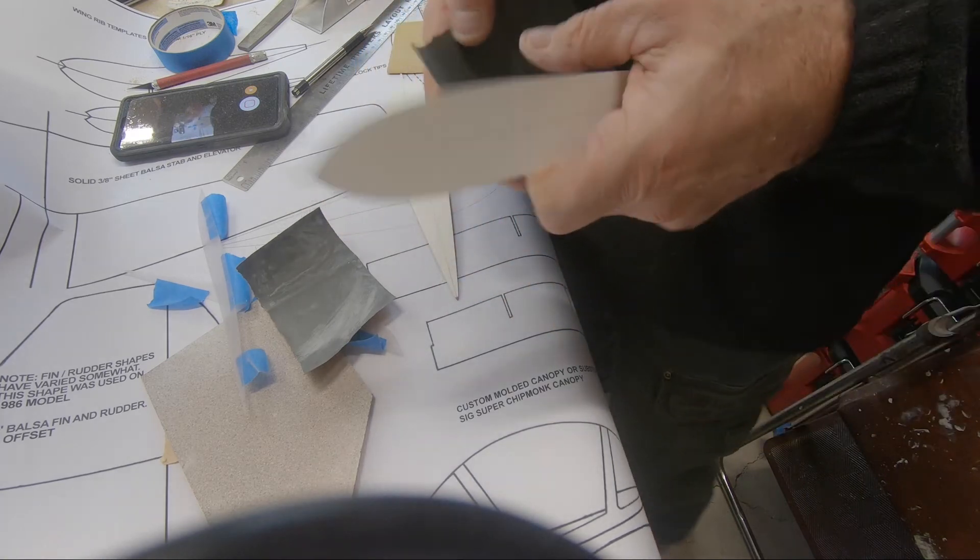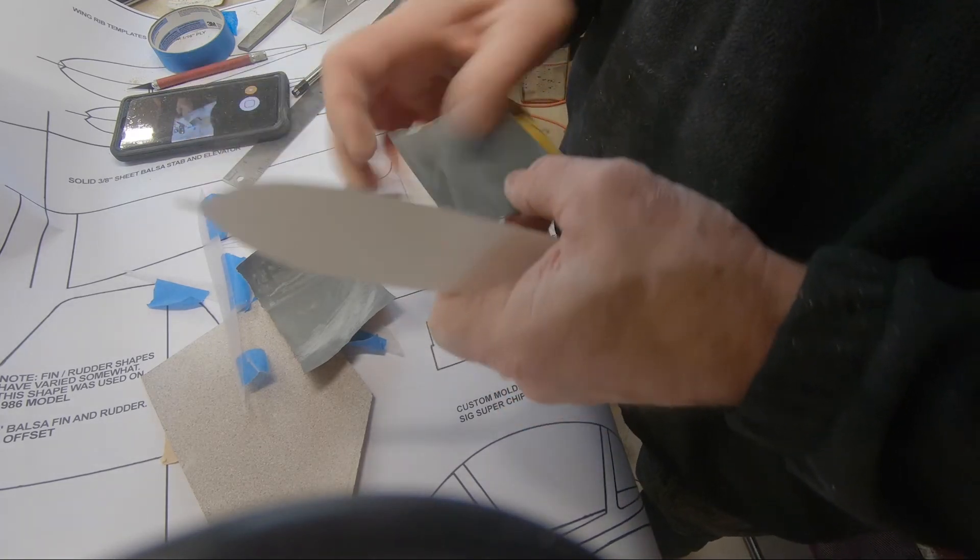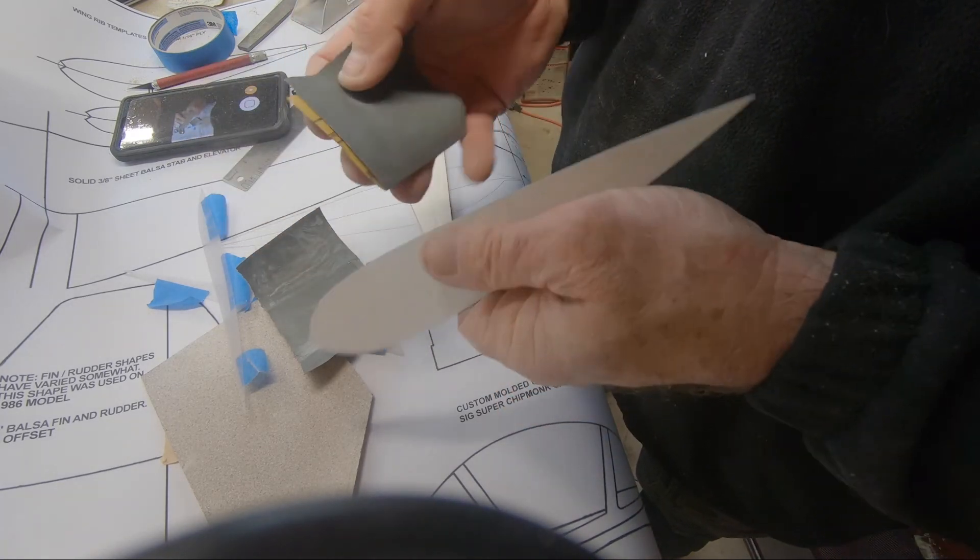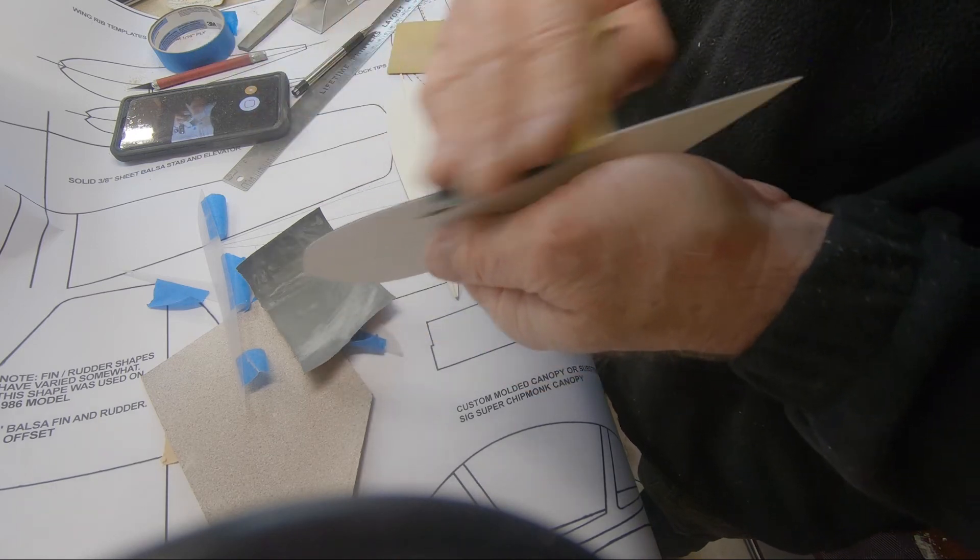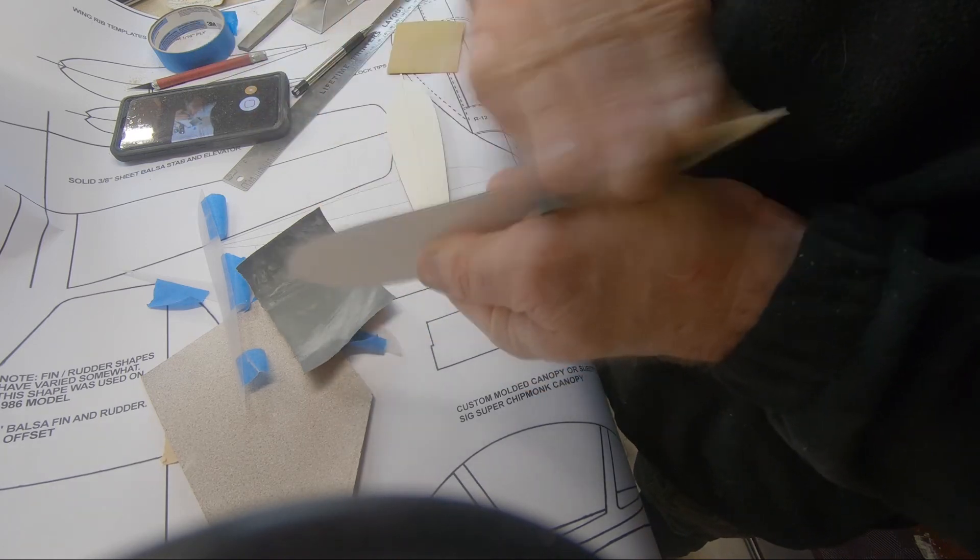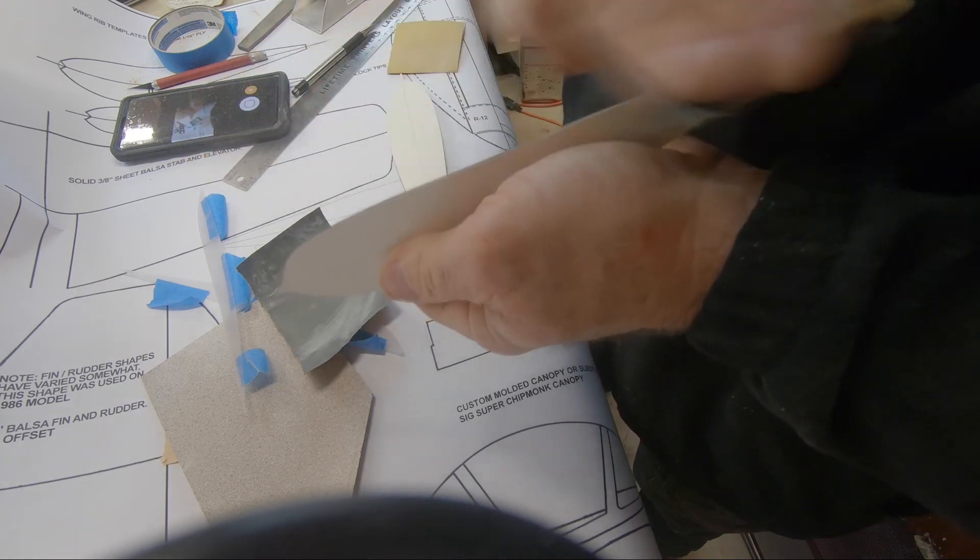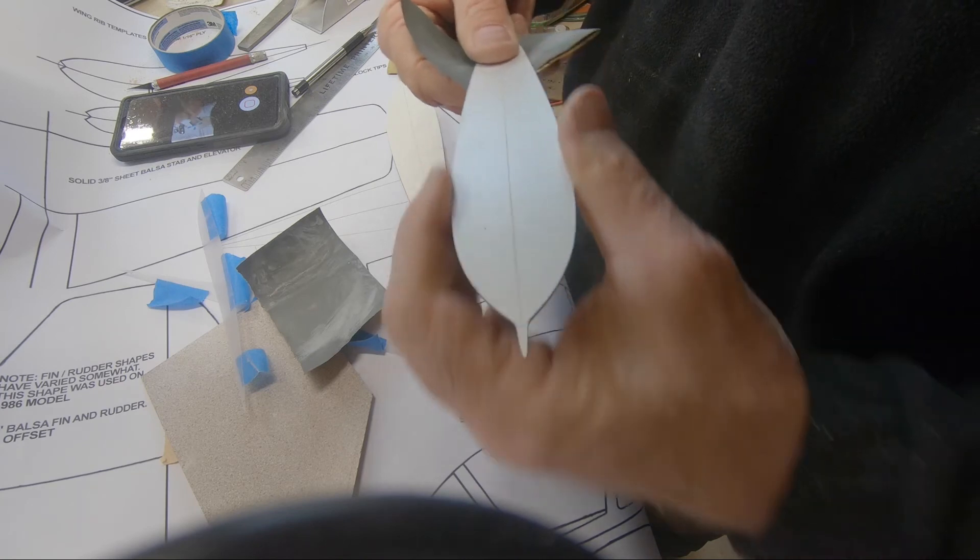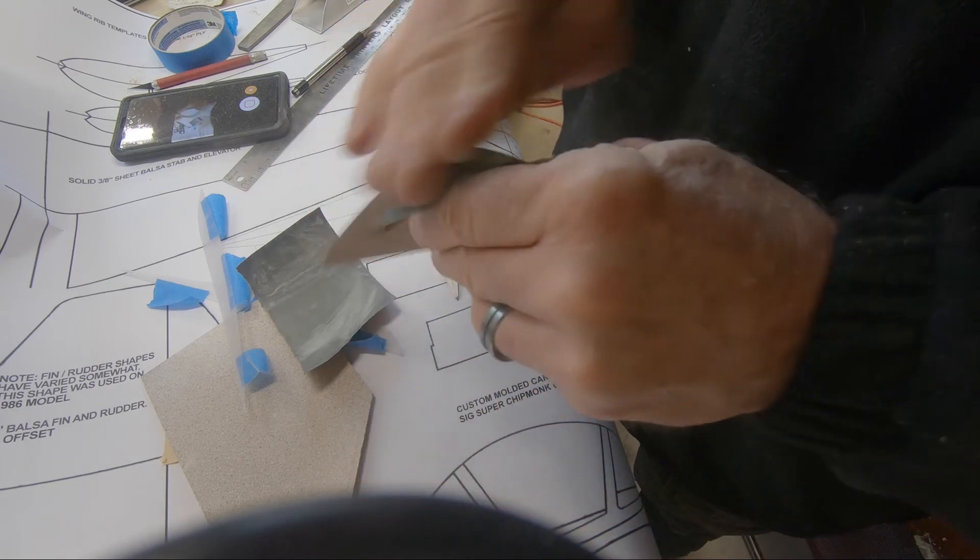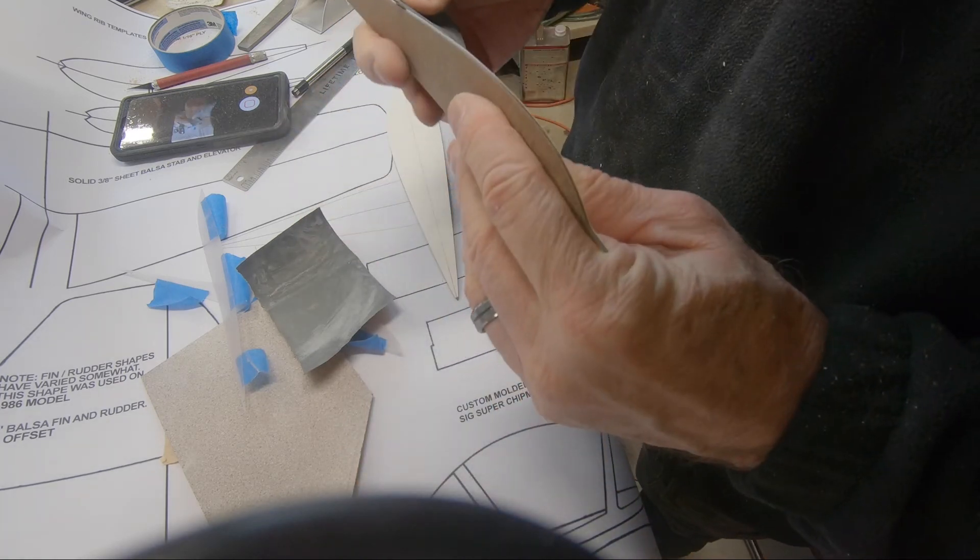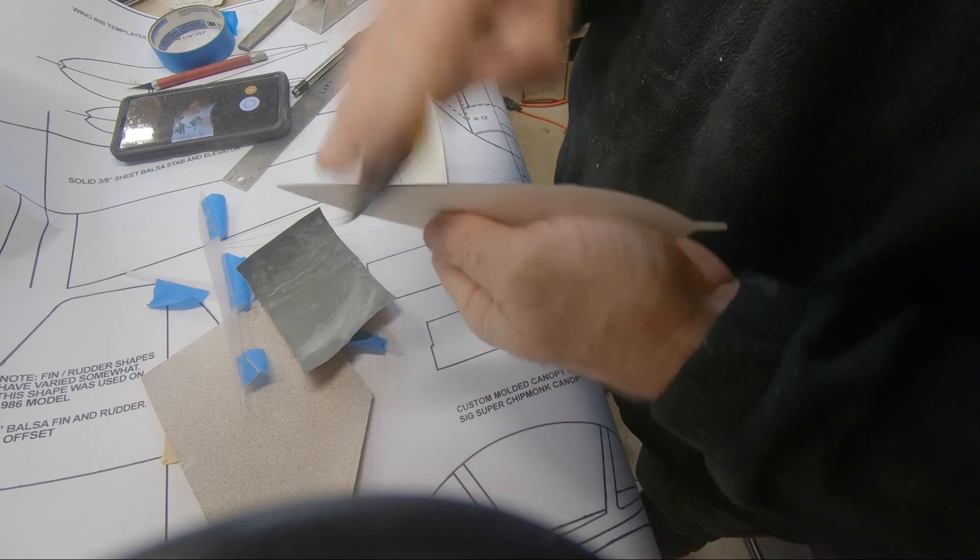So the last step here, as far as finishing these templates, is take—this is two thousand. You know, the reason I'm using it is what I could find in the drawer. Six hundred and a thousand might be good, but this works. It's putting a really nice slick edge on this template.